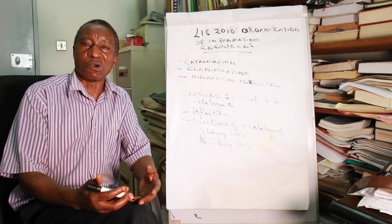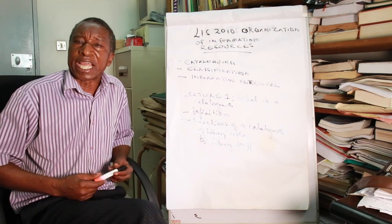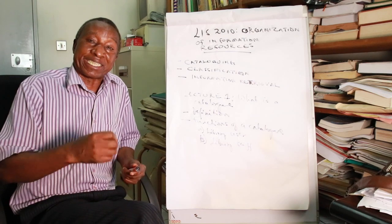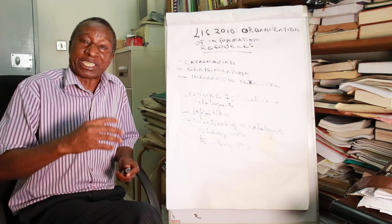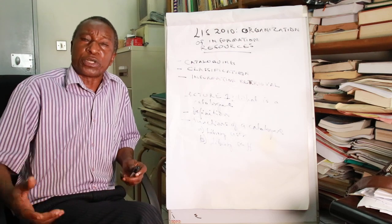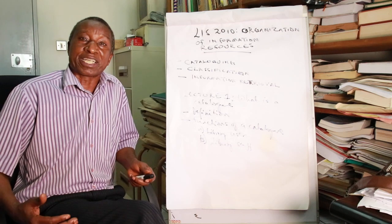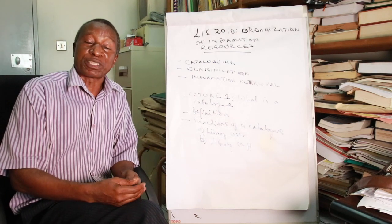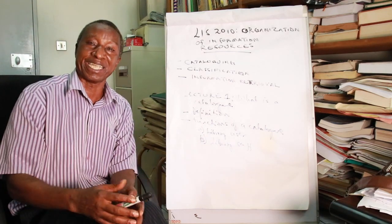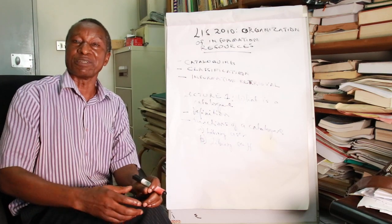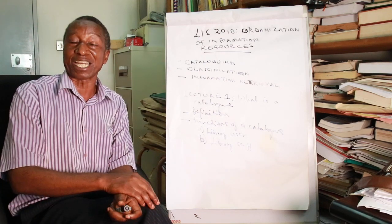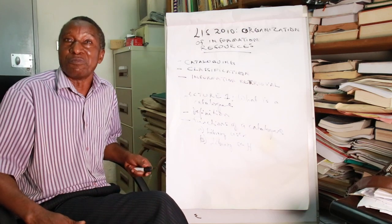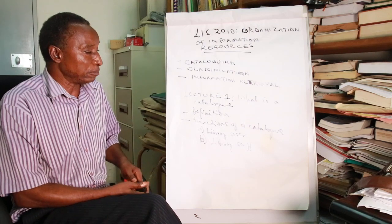A catalog, generally speaking, is an inventory of things organized in a systematic manner or a particular order. This inventory can be of objects or things that have been manufactured by a particular company, or an inventory of products being sold by a particular company. For example, a company selling shoes can provide a catalog of the types of shoes they are selling. You can have an automobile company providing an inventory of the types of vehicles and models that they are selling.